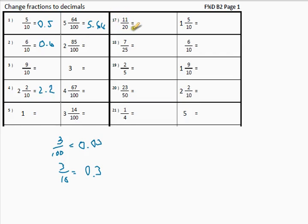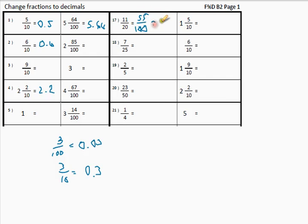Now, what do we do when we have something like this where we don't have a 10 at the bottom? First of all, let's change it. Can we change it to a 10 at the bottom? What will be easier is 100, because we learned in the first video how to do this. 20 times what gives us 100 — times 5. So we need to multiply the top by 5 as well. In other words, 55 over 100. What will that be as a decimal? 0.55.